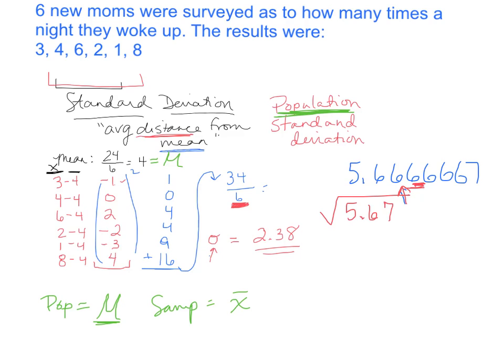There are other symbols to discuss. The number 5.67 has a name in statistics: it's called the variance. It's the standard deviation squared — the number you got before you took the square root. The symbol is sigma squared.